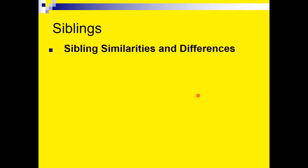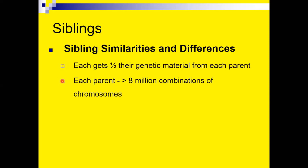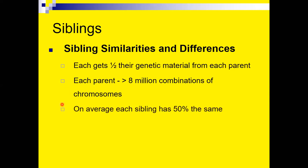When we look at genetic similarities among relatives, siblings each get half of their genetic material from each parent. Each parent can produce roughly 8 million combinations of chromosomes from their own genetic material, so there is potential for considerable variability. On average, a brother or sister shares about 50% of the DNA that differs from one person to another — which accounts for why siblings are similar yet different.